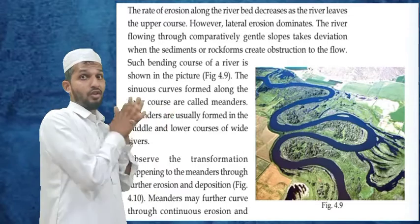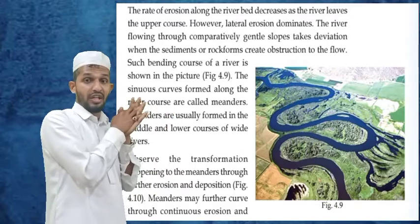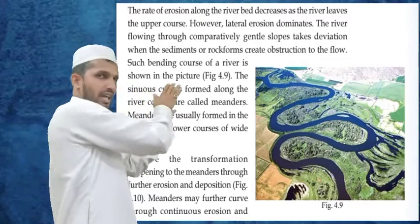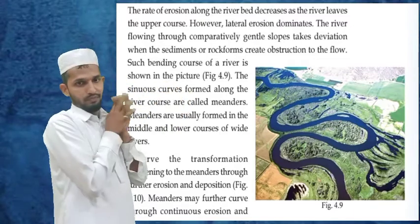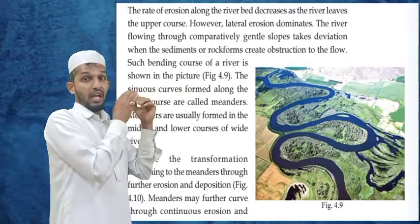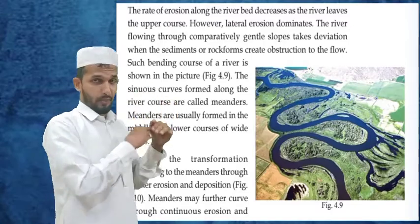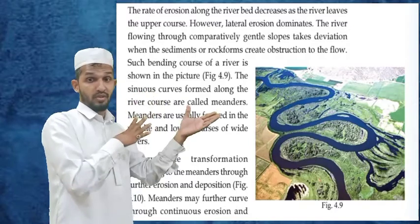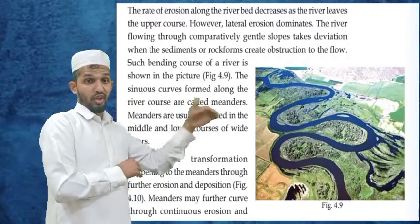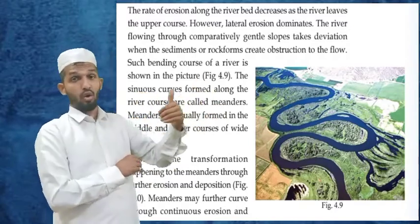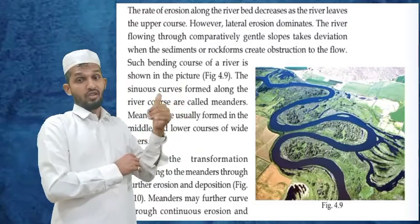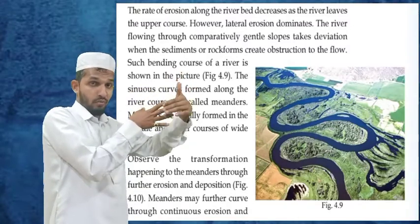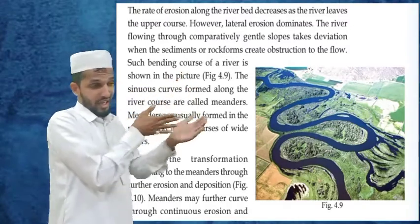The rate of erosion along the river bed decreases as the river leaves the upper course. Lateral erosion dominates as the river flows through comparatively gentle slopes. It takes deviation when sediments or rocks form obstructions to flow — sediments and rocks in the middle of the river's direction.